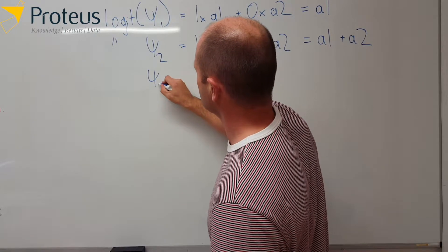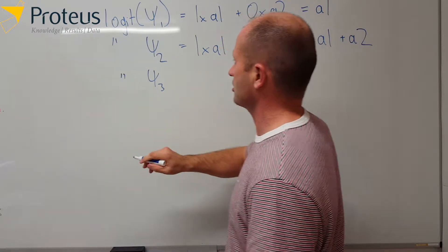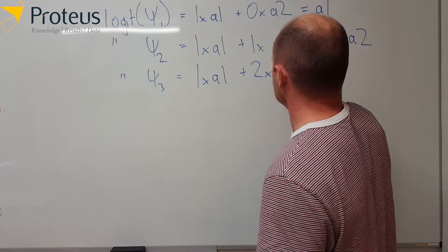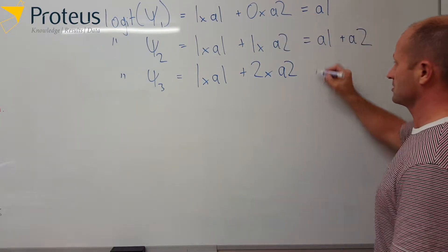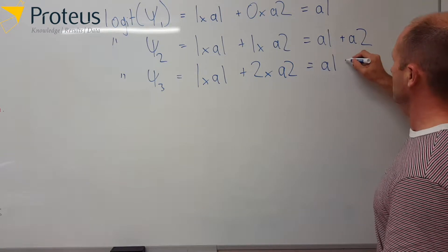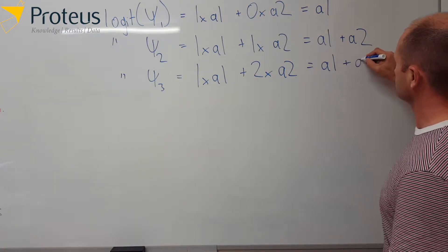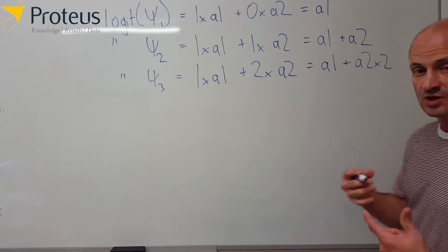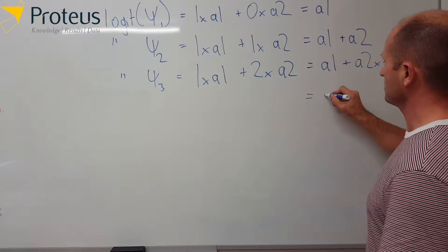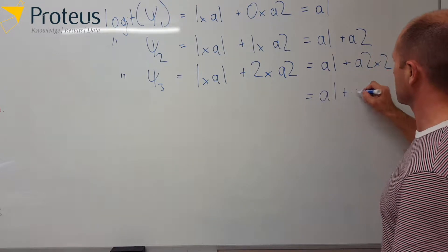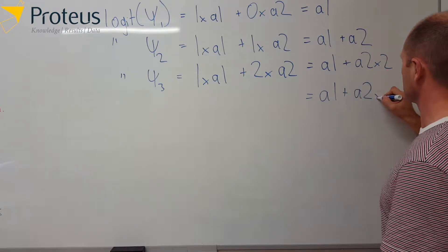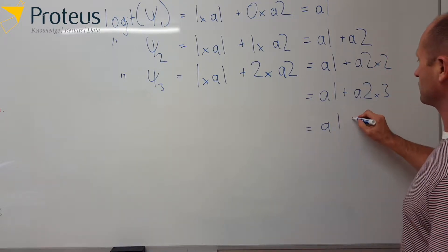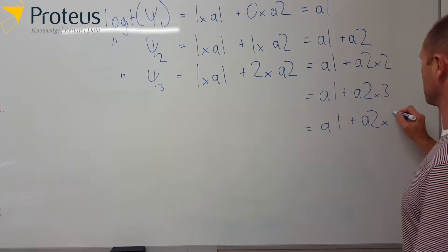And for the third row, again it's on the logit scale. We're saying it's 1 times a1 plus 2 times a2, so just a1 plus a2 times 2. And so on for the remaining time periods. We have a1 plus a2 times 3, and then for the fifth one, a1 plus a2 times 4.